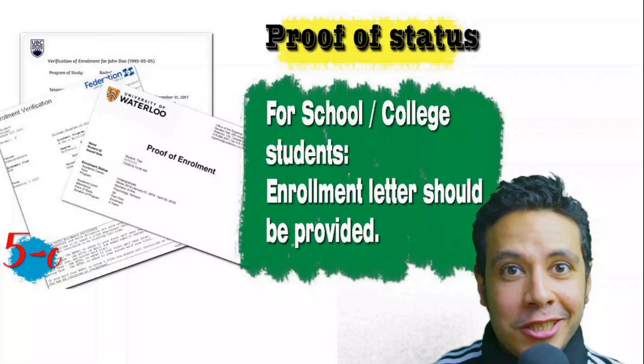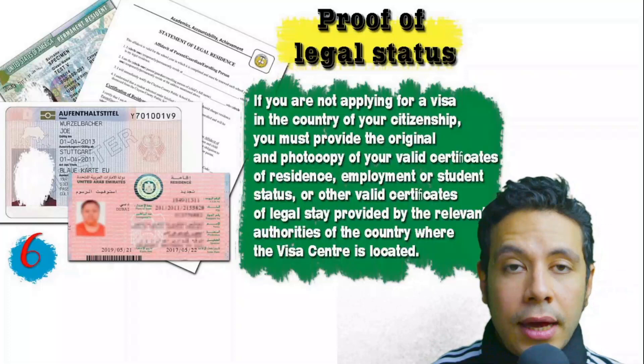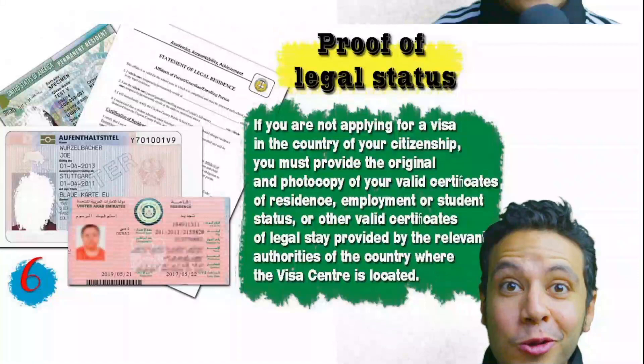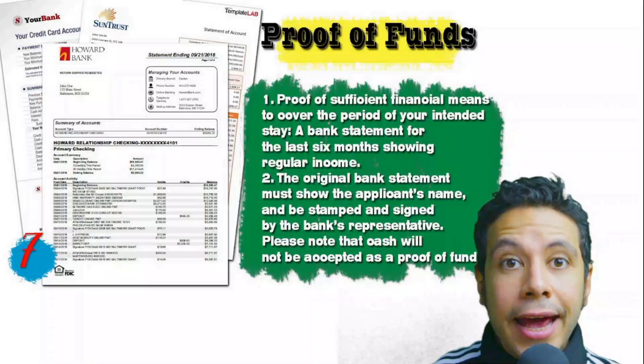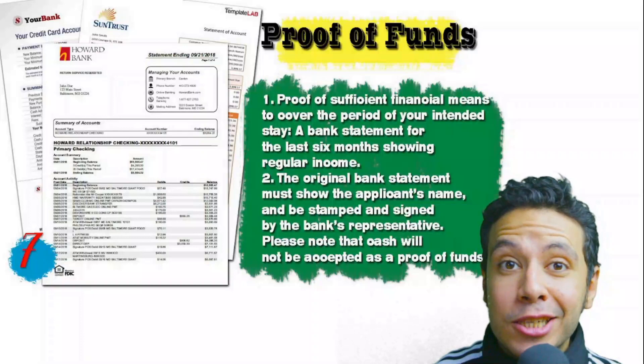In some cases you might be applying from a country different from your own. At that point you will need to provide proof of legal residence in that country — a certificate of legal residence — and in some cases a valid residence visa for that country can also be accepted. You will also need to provide a proof of sufficient funds: a bank statement showing your balance for at least six months. The original bank statement must show your name and be signed and stamped by bank representatives. Note that cash will not be accepted as proof of funds.